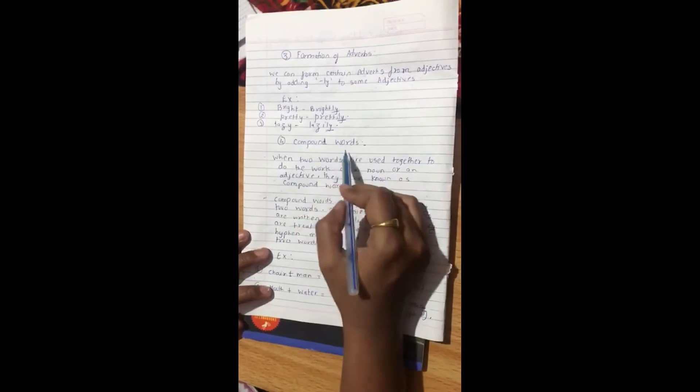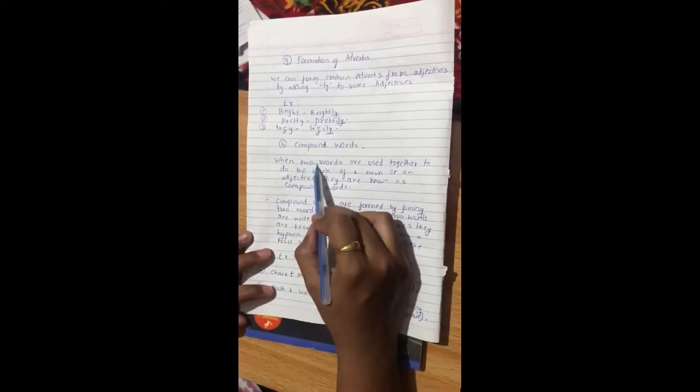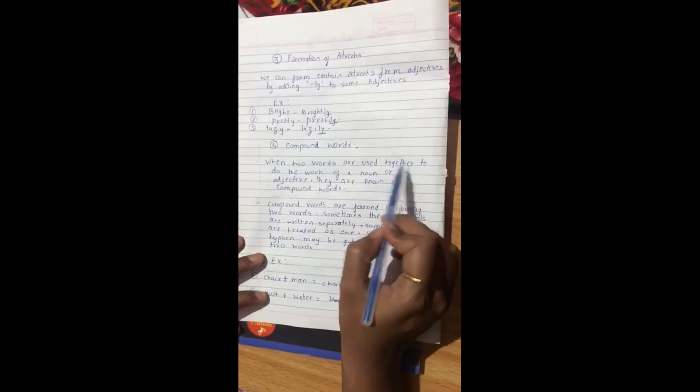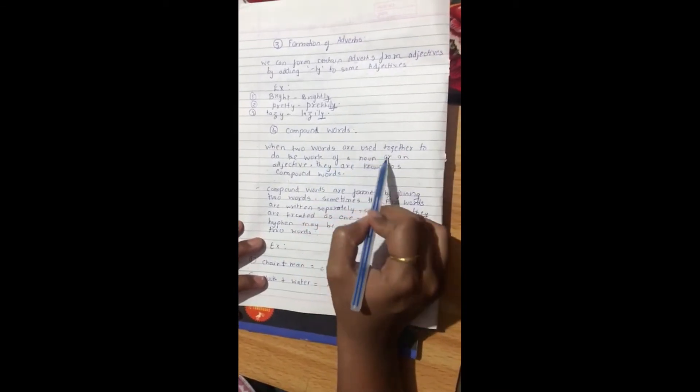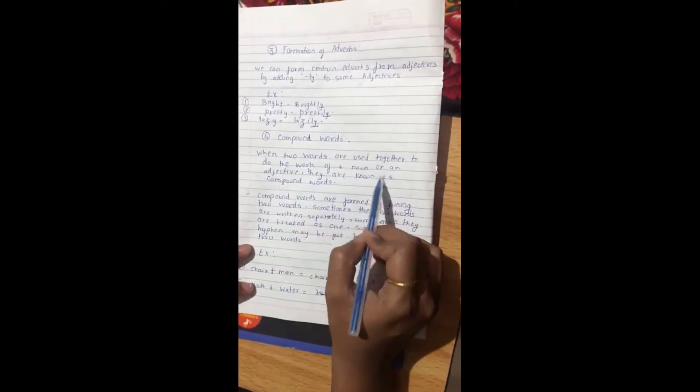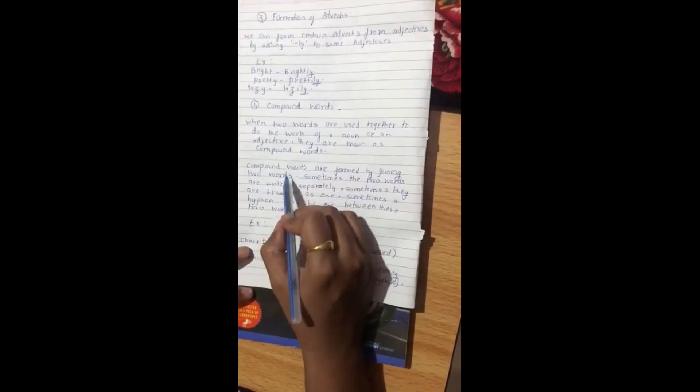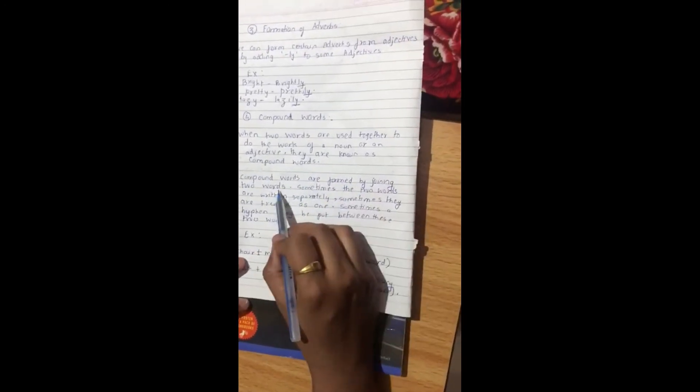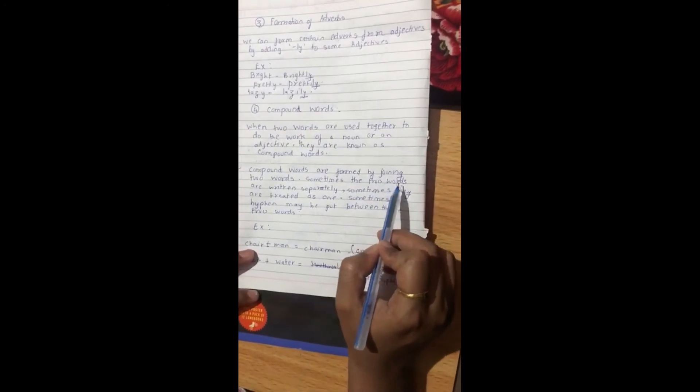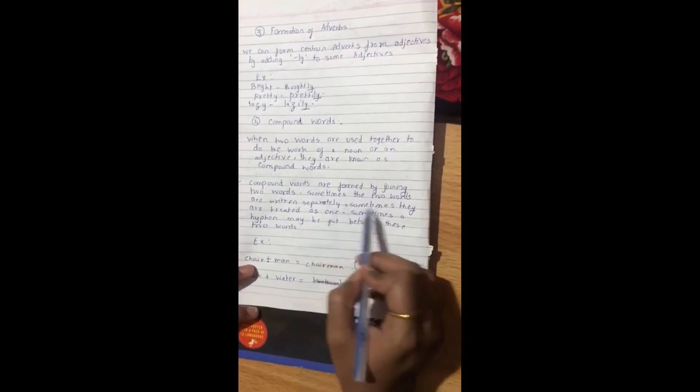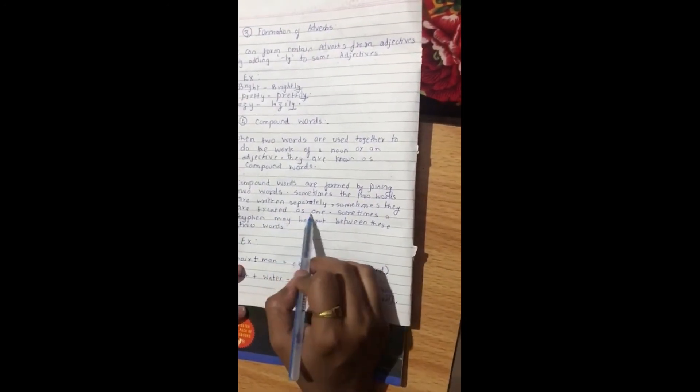Fourth is compound words. When two words are used together to do the work of a noun or an adjective, they are known as compound words. Compound words are formed by joining two words. Sometimes the words are written separately, sometimes they are treated as one.